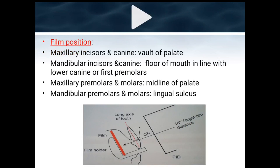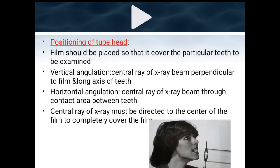Film position in paralleling technique: for maxillary incisors and canines, place the film at the vault of the palate; mandibular incisors and canines at the floor of the mouth in line with lower canines or first premolars; maxillary premolars and molars at the midline of the palate; mandibular premolars and molars at the lingual sulcus. The film is placed parallel to the long axis of the tooth using a film holder.